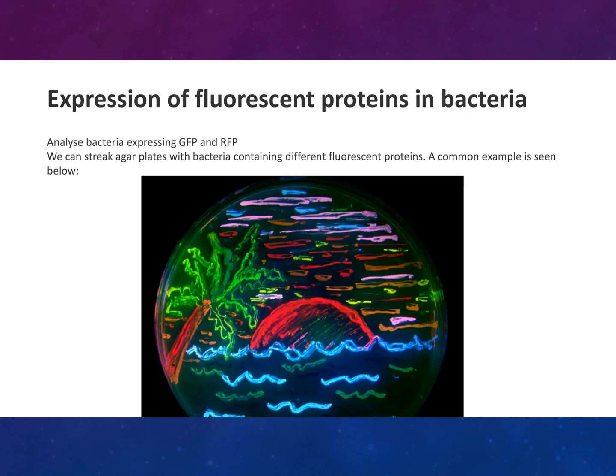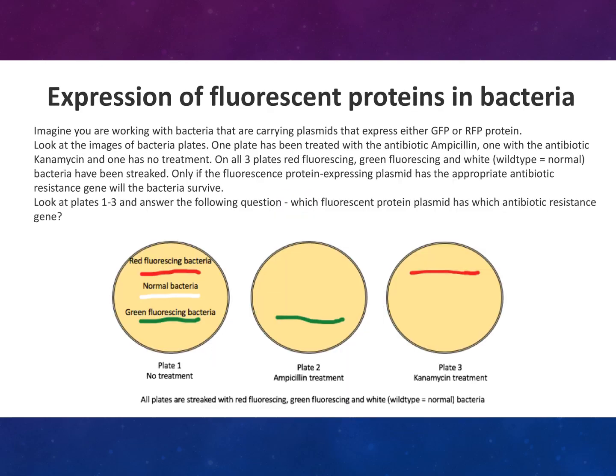You can analyse bacteria expressing GFP and RFP by streaking agar plates of bacteria containing different fluorescent proteins. Imagine you are working with bacteria carrying plasmids that express either GFP or RFP. One plate has been treated with ampicillin, one with kanamycin, and one has no treatment. On all three plates, red fluorescent, green fluorescent, and wild type (normal, no resistance) genes have been streaked. Only the fluorescent protein-expressing plasmid has the appropriate antibiotic resistance gene. Which fluorescent protein plasmid has which antibiotic resistance gene? Take a moment to think about that.